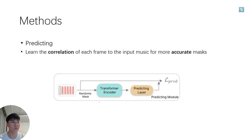We then use a predicting layer to recover the masked positions from the output of the transformer encoder, obtaining a prediction loss.